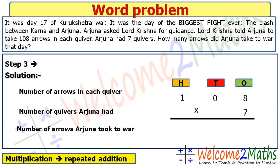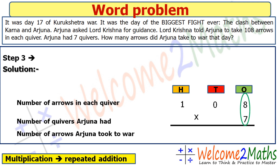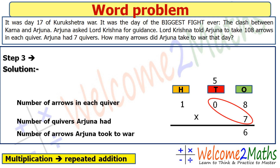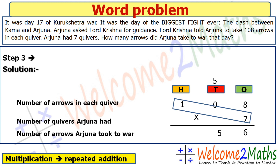So we multiply 108 by 7. We start from the ones place: 7 × 8 = 56, so 6 is written and 5 is carried over. Next, 7 × 0 = 0, plus the carry of 5 gives 5 at the tens place. Then 7 × 1 = 7 at the hundreds place. So the result of the multiplication is 756.